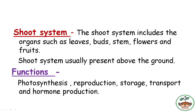The shoot system includes organs such as the leaves, buds, stems, flowers, and fruits. The shoot system is usually present above the ground surface. The important functions performed by the shoot system are photosynthesis, reproduction, storage, transport, and hormone production.